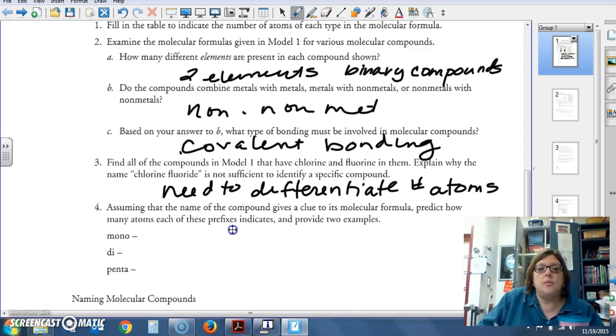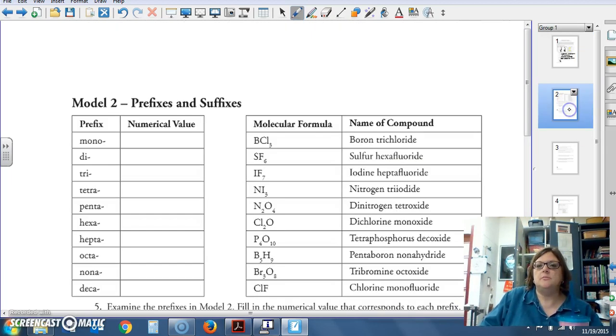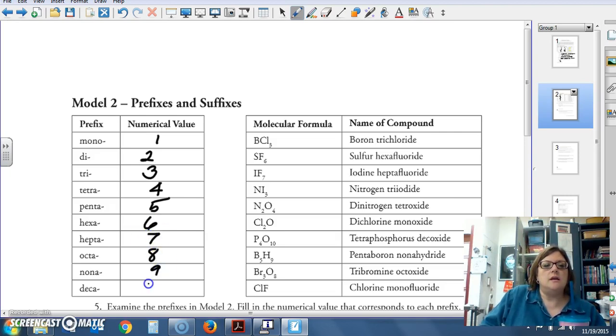Assuming the name of the compounds gives a clue to molecular formula, predict how many atoms that these prefixes indicate. What do you think mono indicates? One. Good. How about di? Two. Good. How about penta? Five. Hopefully, you all remember pentagram, pentagon. Penta means five. All right. Let's put our values in. Mono is one. Di is two. Tri is three. Tetra is four. Penta is five. Hexa six, hepta seven, octa eight, nona nine, and deca ten.